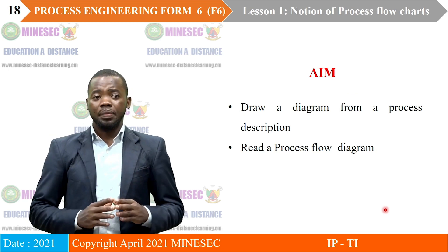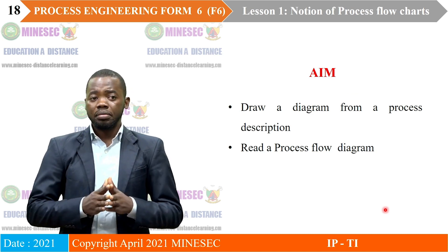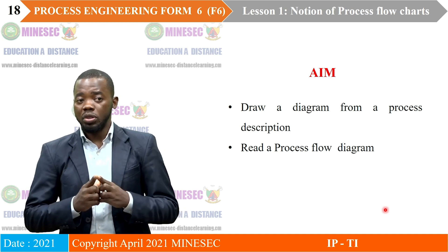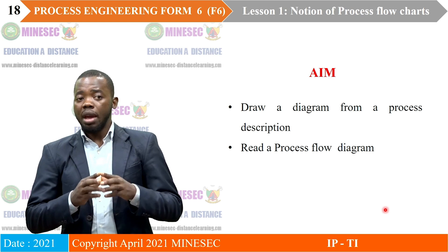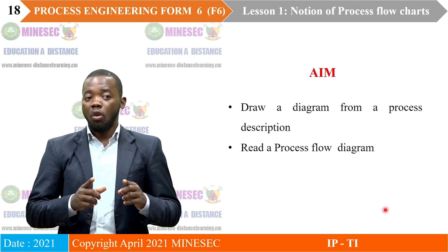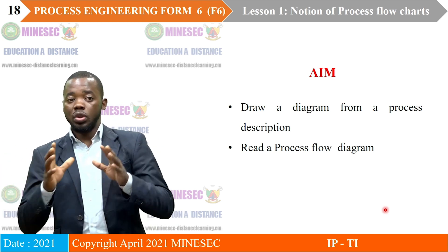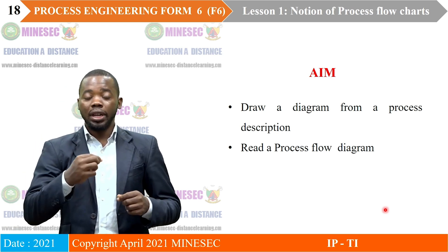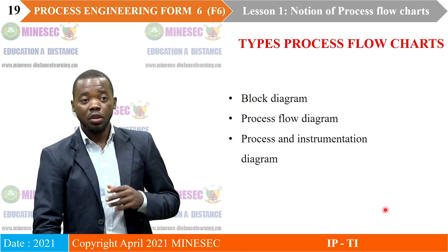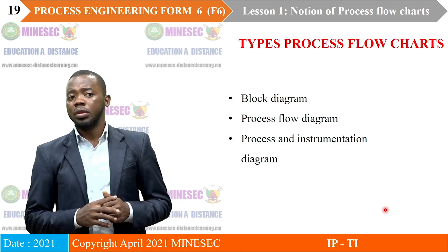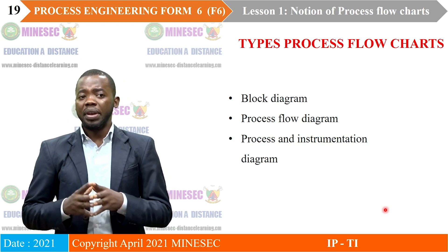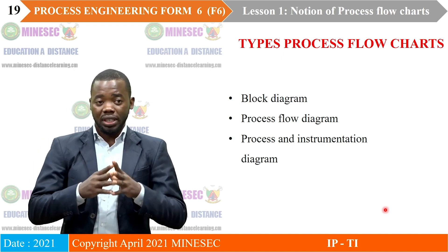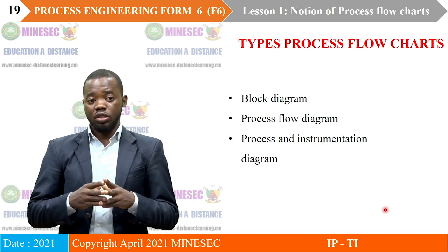Process flowcharts are used to draw the diagram from a process description. At the end of this course, you should be able to draw the diagram of a process from its description, and vice versa — produce a description from a corresponding flowchart. There are three basic types of process flowchart used in chemical industry: the block diagram, the process flow diagram, and the process and instrumentation diagram.